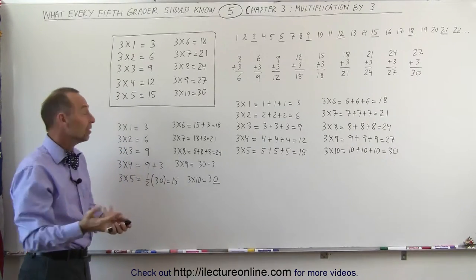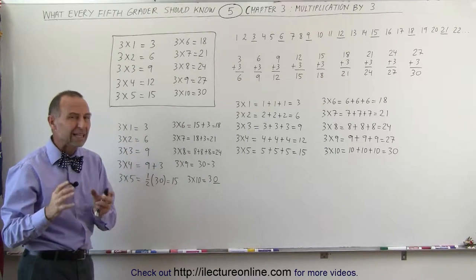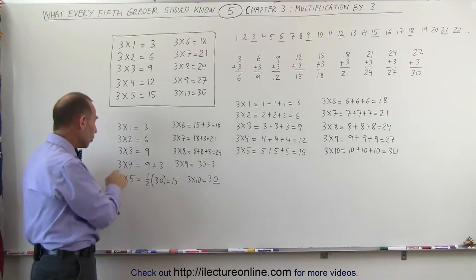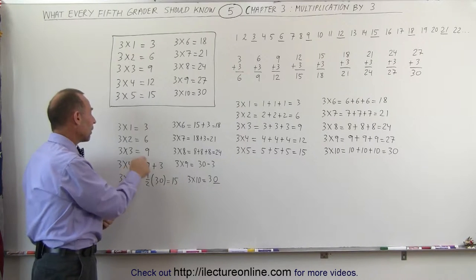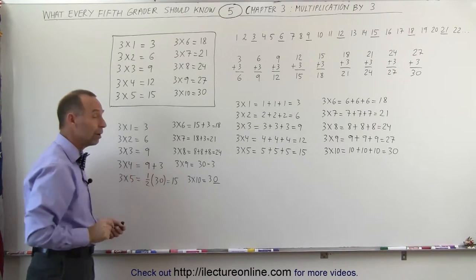for the first 3, it's fairly easy. 3 times 1 is 3, 3 times 2 is 6, 3 times 3 is 9. Most of us can easily recognize that. And then if you go to the next one, 3 times 4, grab the previous answer of 3 times 3, which is 9, and simply add 3 to it, you get 12.